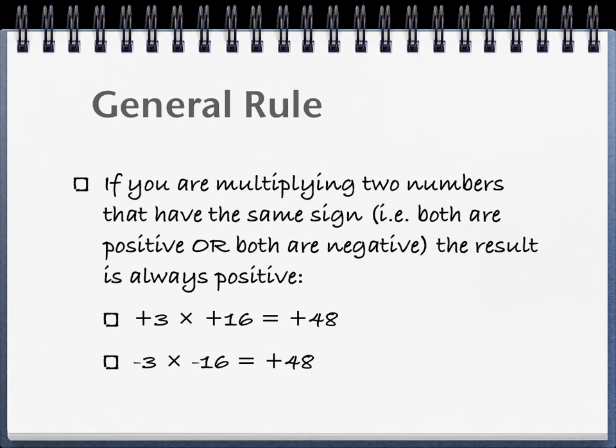So the general rule here is if you're multiplying two numbers that have the same sign, that is to say both numbers are positive or both numbers are negative, the result is always going to be positive. So positive 3 times positive 16 equals positive 48. And negative 3 times negative 16 equals positive 48.